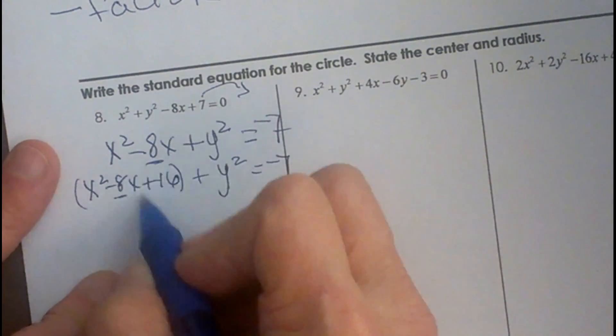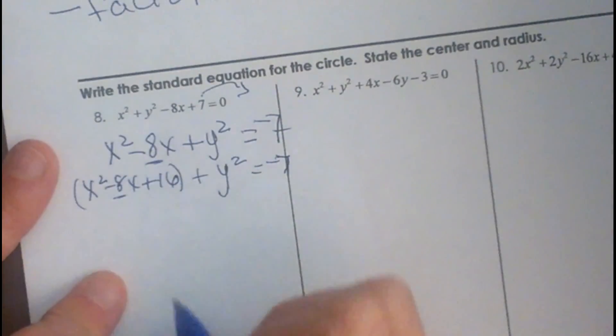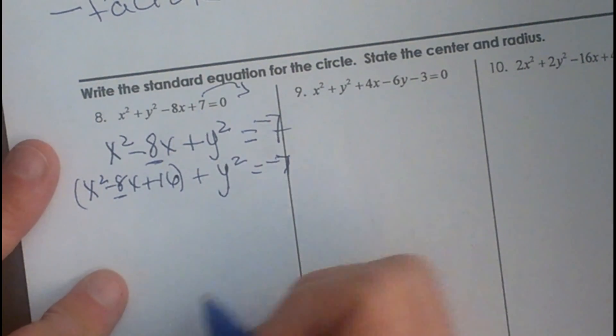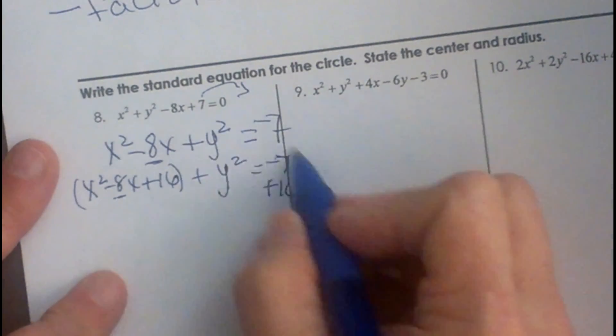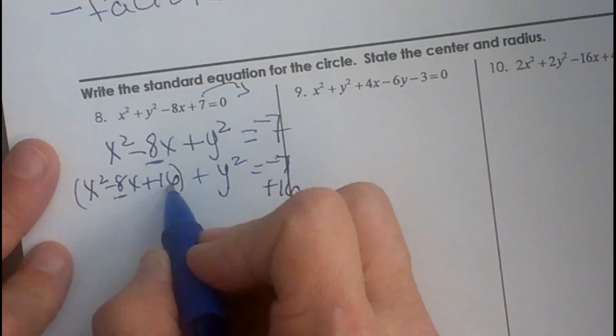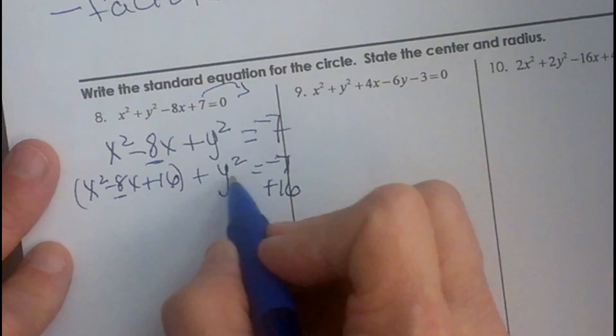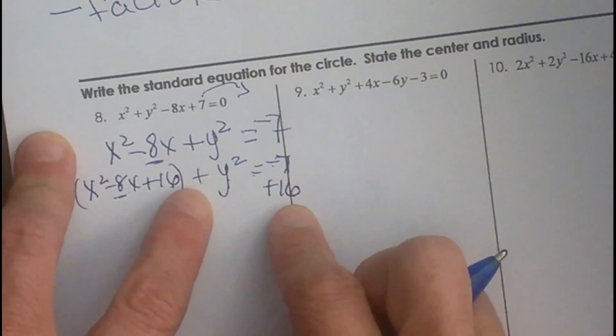Okay now what we just did is we added 16 to this equation. You cannot just add 16 to the left side of an equation and still expect it to be an equation so we have to add it to the right side. So we are going to add 16 to the right. So far we have x squared minus 8x plus 16 plus y squared is equal to negative 7 plus that 16, so we just added 16 to both sides.